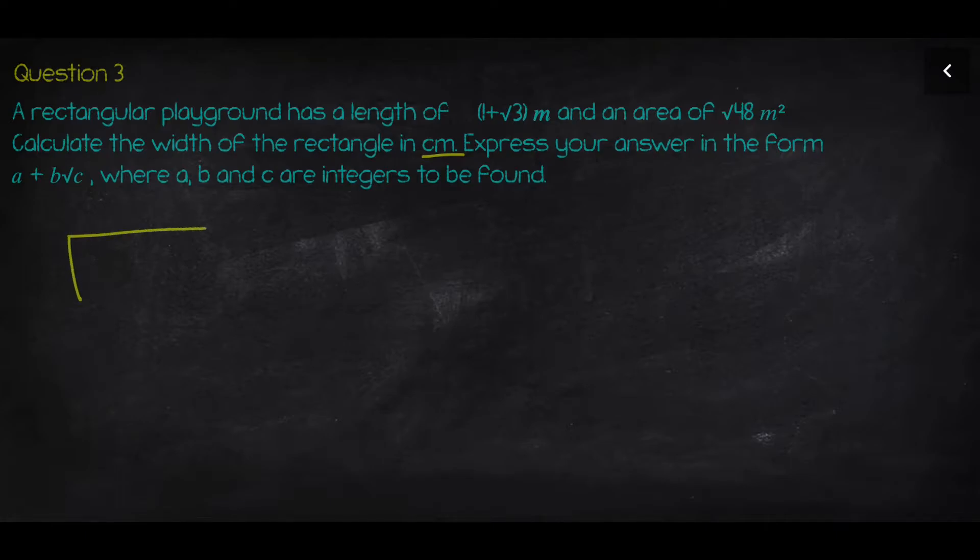If we have a rectangular playground, it will have length and width. To calculate the area of this shape, we multiply width by length. So we need to express the width from here. According to the formula, it's going to be area over the length. Let's put everything together.